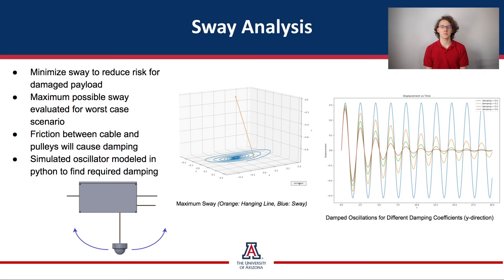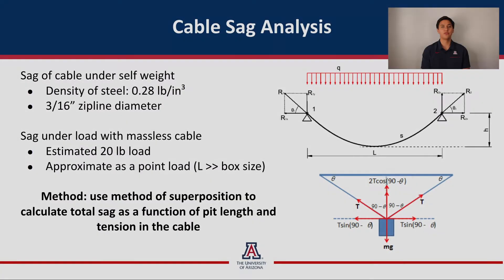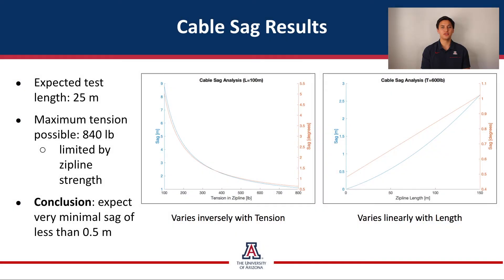One concern for the system is the sway of the rover while on the zipline. By modeling it as a damped pendulum, we found that the sway diminished over time, reducing risk to the rover. It is also important both for the mission and for testing that we minimize sag in the cable. This analysis was done by superimposing the weight of the zipline along with that of the hanging payload. These diagrams show the effects of cable tension and length on sag, and we can expect a very minimal sag of less than half a meter when testing here on Earth.